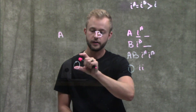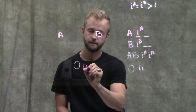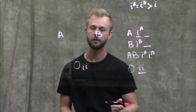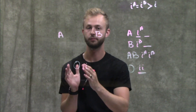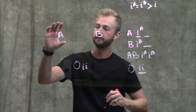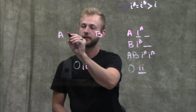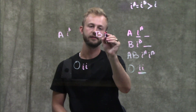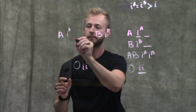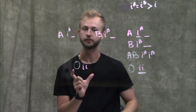We know that for an individual to have O type blood, they have to have two I alleles, because this is the only possible combination that will give us that blood type. We also know that for an individual to have type A blood and type B blood, they need to have at least an IA and an IB respectively. So the mystery is the second allele in each of these individuals.